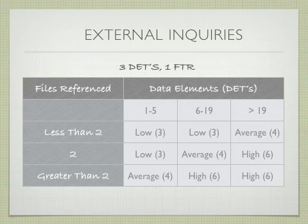So for external inquiries: three data elements, one file type reference. That would be between one and five data elements, less than two FTRs - or one FTR in this case - rated as low and valued at three function points.